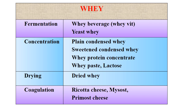Here we will see the utilization of whey. By fermentation we can make whey beverage, whey wine, or yeast whey. By concentration we can make plain condensed whey, sweetened condensed whey, whey protein concentrate, or whey paste. We can also make lactose. By drying we can get dried whey, and by coagulation we can make ricotta cheese, mysost cheese, or primost cheese.